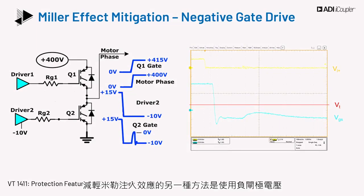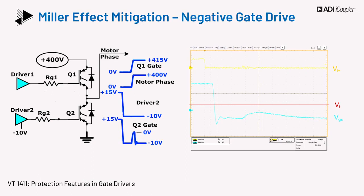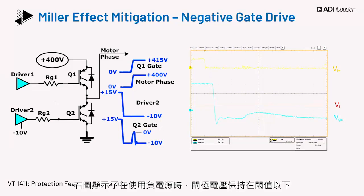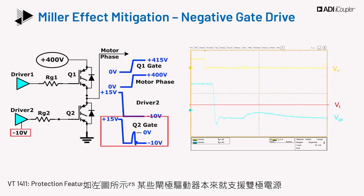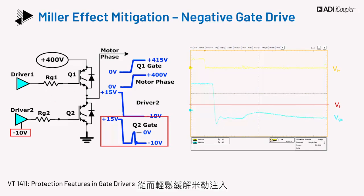Another way to mitigate the effects of Miller injection is to use a negative gate voltage. This maintains the voltage injection due to Miller capacitance below the device threshold. The gate voltage is kept below the threshold when using a negative supply, and thus, even without a separate low impedance path, we can prevent parasitic turn-on. Some gate drivers inherently support a bipolar supply, and these can be easily used for mitigating Miller injection by bringing the gate-to-source voltage negative during turn-off.